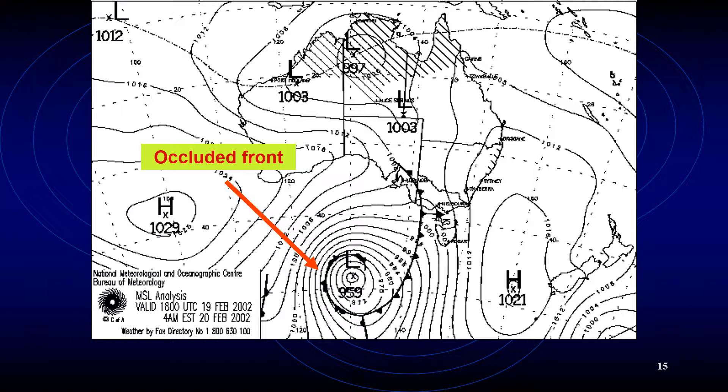The occluded front is designated by triangles from the cold front and semicircles from the warm front, both drawn in the direction of movement of the front. The low pressure at the core is almost dissipated and the front has almost died, though it is still moving and may form a second depression later on.